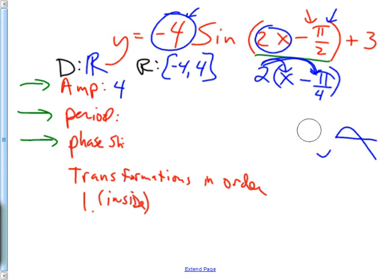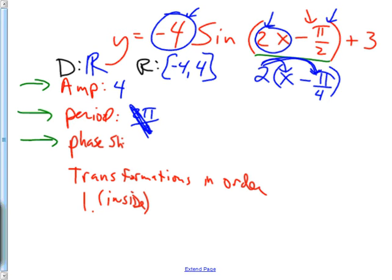Period: it's normally 2π, but the formula for period is 2π/b. If you replace b with the value in our equation — which is 2 — you get 2π/2. You should reduce that; the answer is just π. Period is π. The phase shift, now that we've factored it, is right there and you'd say right or left — not negative.